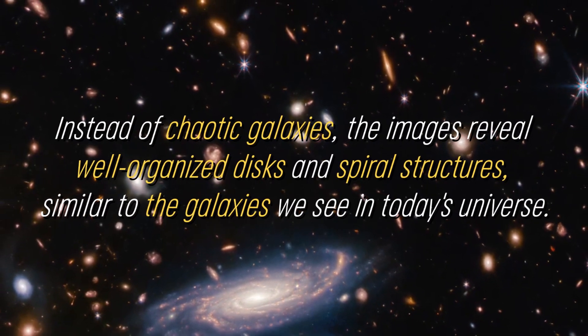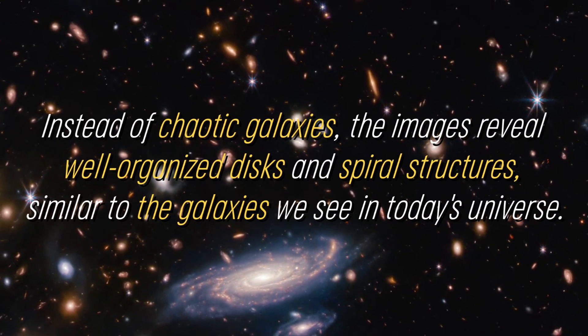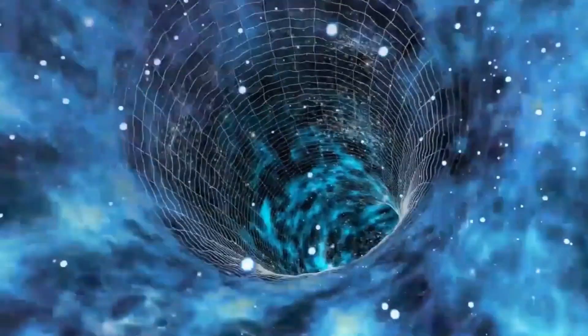Instead of chaotic galaxies, the images reveal well-organized disks and spiral structures, similar to the galaxies we see in today's universe. This unexpected observation challenges the idea that mergers are a common process in galaxy evolution.